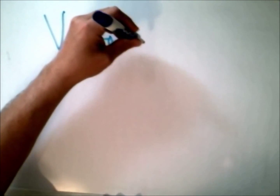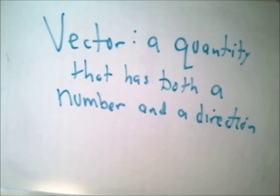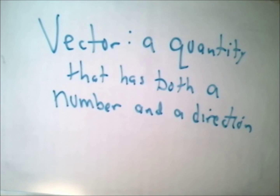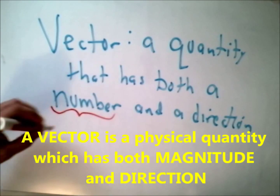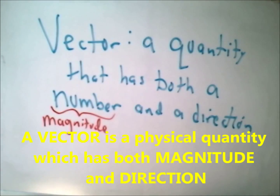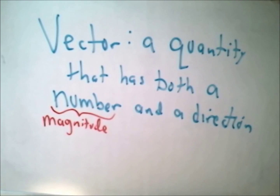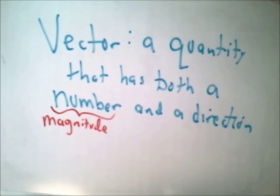A vector is a quantity that has both a number and a direction. The technical word for that number in physics is called the magnitude. The direction is simply going to be an angle — we'll use words like north, south, east, or west, but we have to give a very exact definition of the direction.